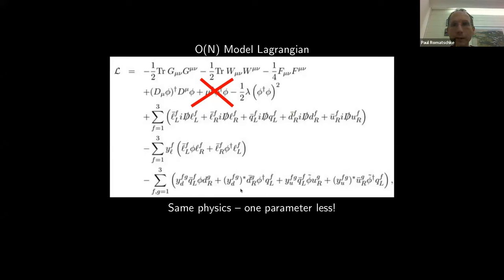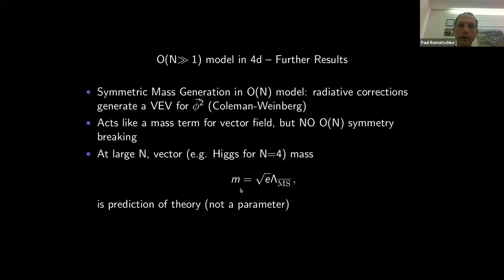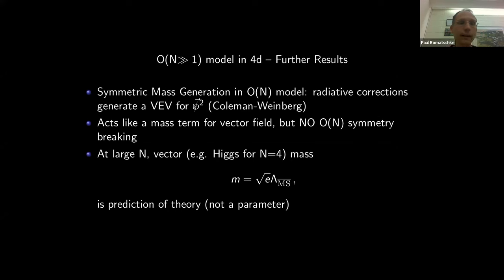If we can flesh this out in the full Standard Model Lagrangian and get the same results with one less parameter, this could be a competitor to the Higgs mechanism. You get what is called symmetric mass generation — a vacuum expectation value for phi squared — which Coleman and Weinberg noted in the 1970s. They also made a prediction for the Higgs mass in this model, but they found a value that was much too low, ruled out by experiment.